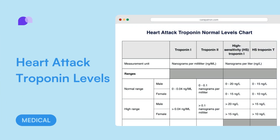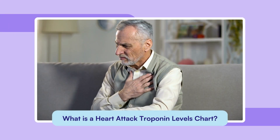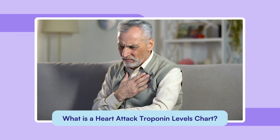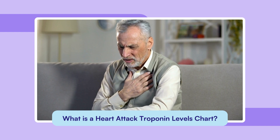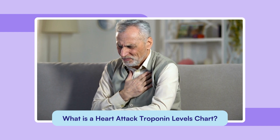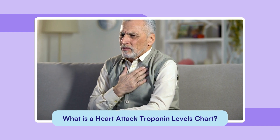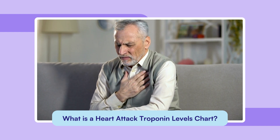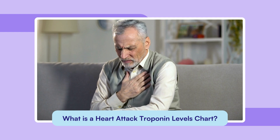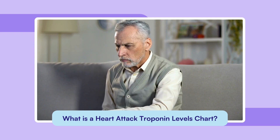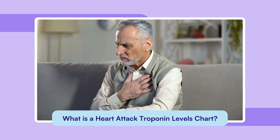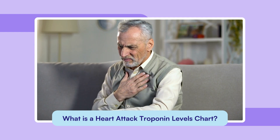A heart attack troponin levels chart is a crucial medical tool that helps healthcare providers distinguish between normal, abnormal, and significantly elevated troponin levels in the bloodstream. Troponin, a protein found in heart muscle cells, is released into the bloodstream when these cells are damaged, such as during a heart attack.